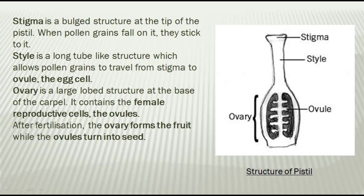So the structure of pistil is: stigma — a bulb structure at the tip; style — a long tube-like structure; and ovary — a large lobed structure at the base of the carpel. After the process of pollination and fertilization, the ovary swells and forms the fruit. Whatever fruit we eat, like a mango, is actually the ovary of the flower. And the seeds present in them are the ovules. So after fertilization, the ovary forms the fruit while the ovules turn into seeds.